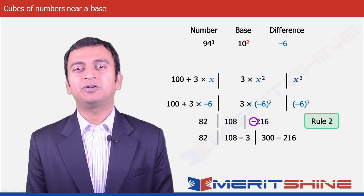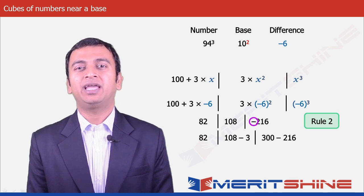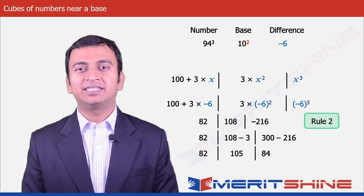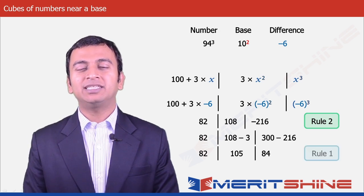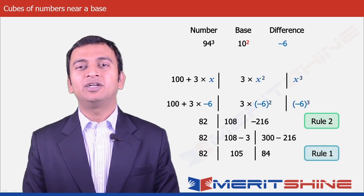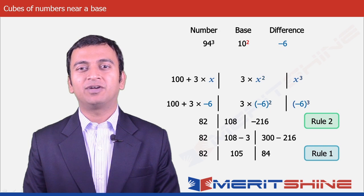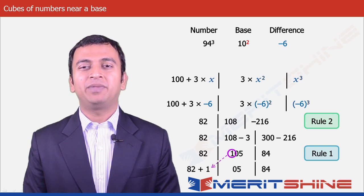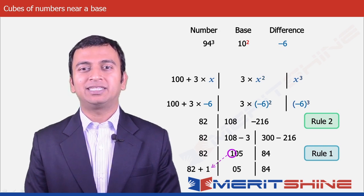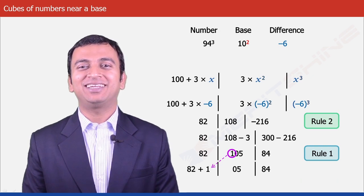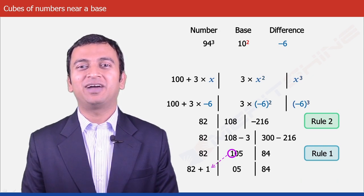And the third part would become 300 minus 216 = 84. Now in the second part we have 3 digits, but Rule 1 says we cannot have more than 2 digits as our base has only 2 zeros. So we carry the extra 1 to the first part, making it 82 plus 1 = 83. So our final answer would be 830,584.